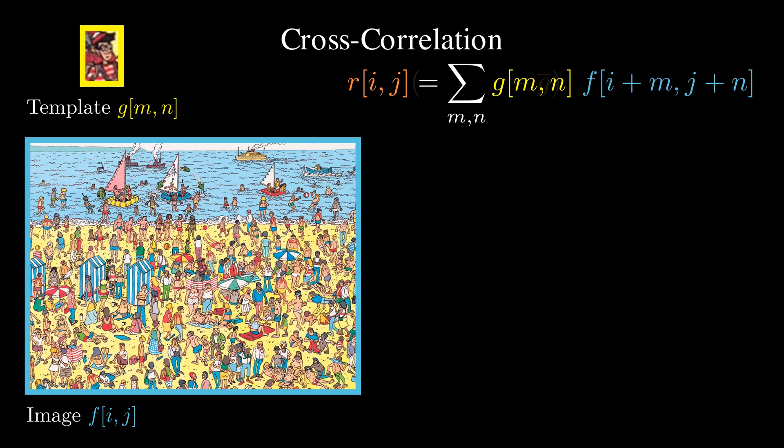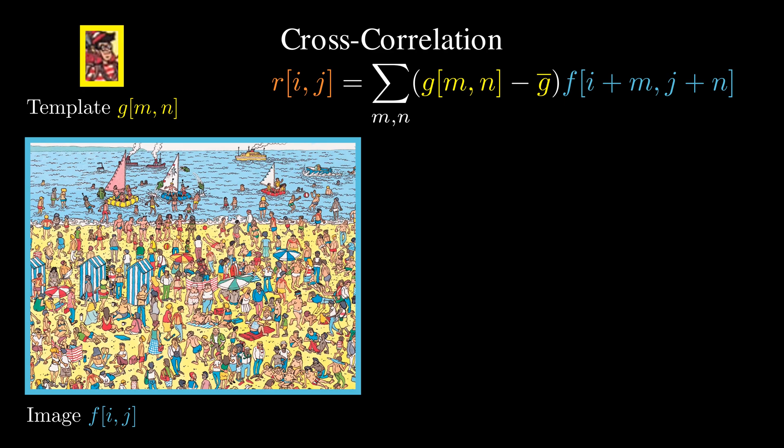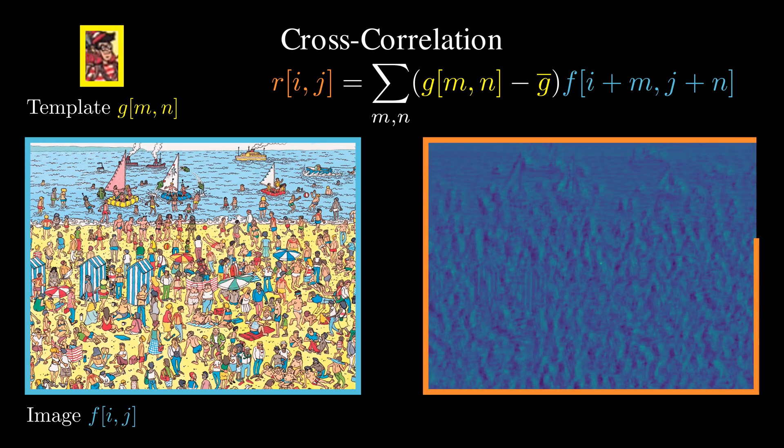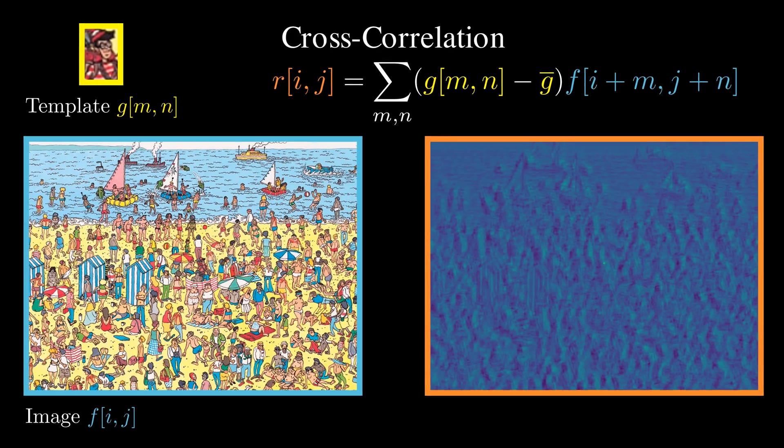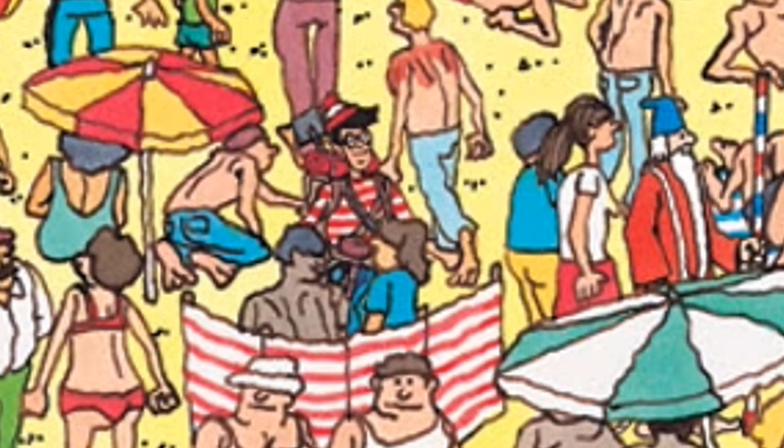To fix this, we subtract the mean color intensity from the template before applying correlation filtering. Much better. Now the response map makes much more sense. The highest response points us straight to Waldo. There you go.